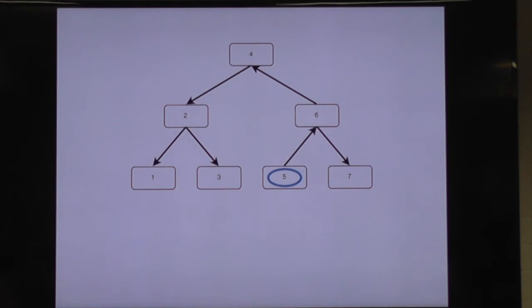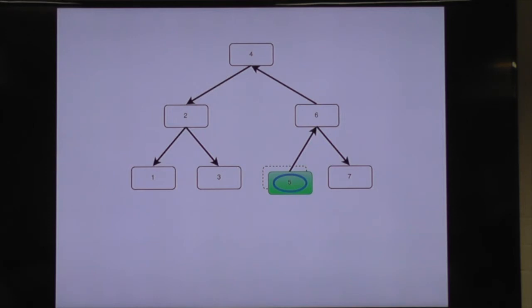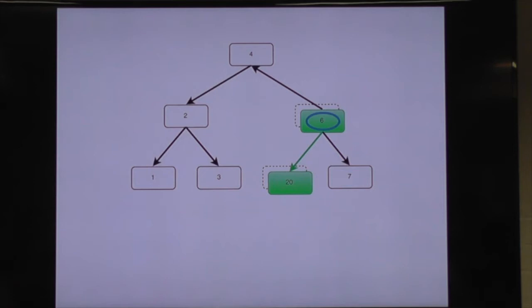Let's walk down further and replace that 5. So we'll walk down into 5 — again, we flip the arrow around. Now we can replace this 5. We've replaced it with a different value. Pretend it's a different number — it's a different instance of 5.